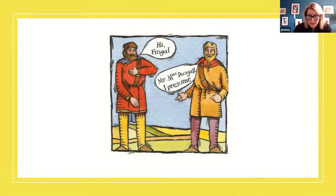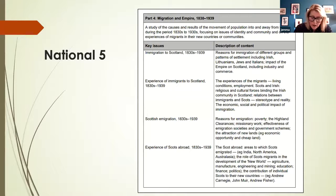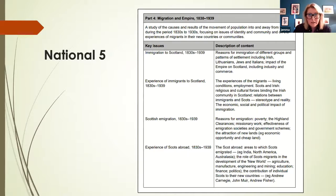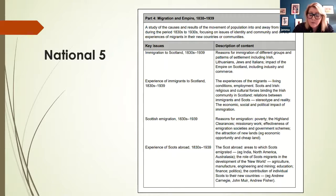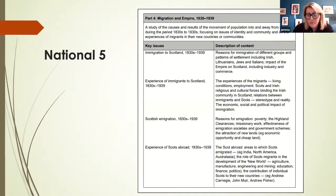We focus more heavily on migration in the senior phase. At both National 5 and Higher, we cover the topics of migration and empire — those two things are taught together — spanning from 1830 to 1939. The course specification for National 5 has mandatory areas covering both the reasons for Scottish migration and the experience of Scots abroad, as well as the reasons for immigrants coming to Scotland. In terms of immigration, we focus on four groups: the Irish (split into Protestant and Catholic), Lithuanians, Jews, and Italians.